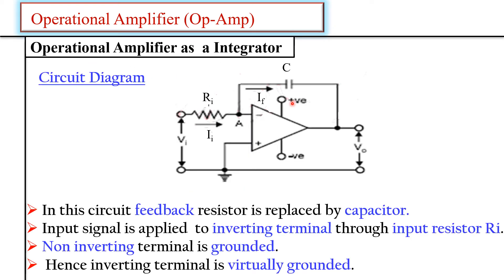Operational amplifier as an integrator — the circuit diagram. Always note that one mark is reserved for the circuit diagram, with proper current flow and parameters shown. Look at the inverting op-amp configuration. In that configuration, the feedback resistor RF was connected between the output terminal and the inverting input terminal. Now, if we replace this feedback resistor with a capacitor C, the same circuit can be used as an integrator.